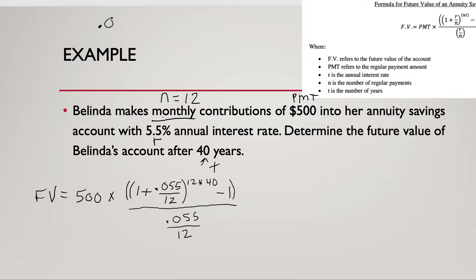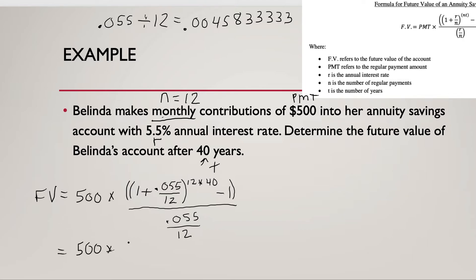First I'll take 0.055 divided by 12 in my calculator. That gives a long decimal: 0.00458333... — I'll use this full decimal in both places in the formula to avoid rounding errors. Adding 1 to that decimal gives 1.00458333... That gets raised to the 480th power, then we subtract 1.